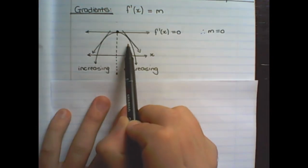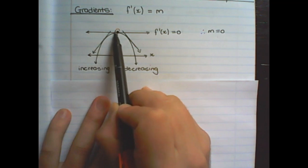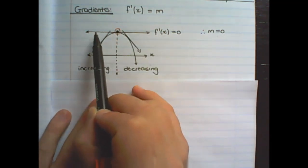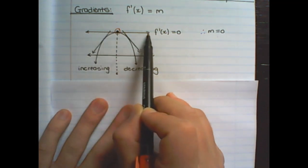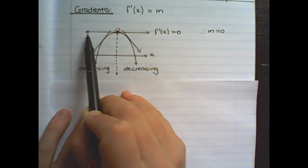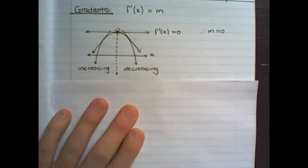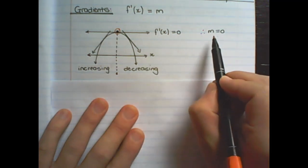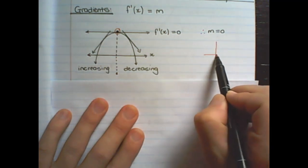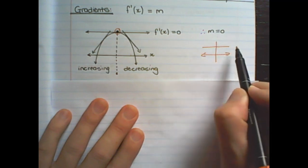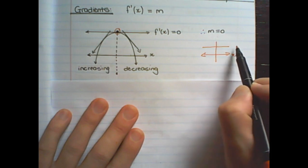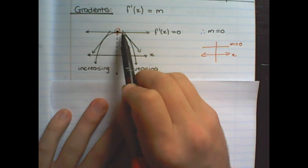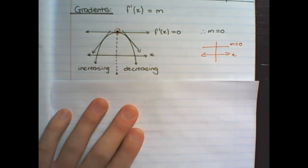If I look at the parabola, the gradient at the turning point is equal to zero. It is equal to zero because at the turning point the tangent line would be horizontal. In grade 9 we learned that if a gradient is equal to zero then that line is parallel with the x-axis. So it's important to remember: the gradient at a turning point in a parabola is equal to zero.